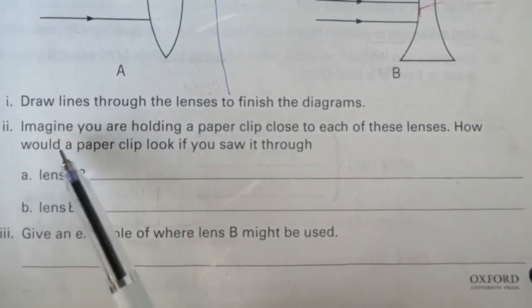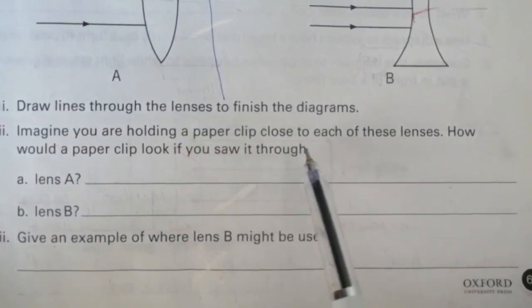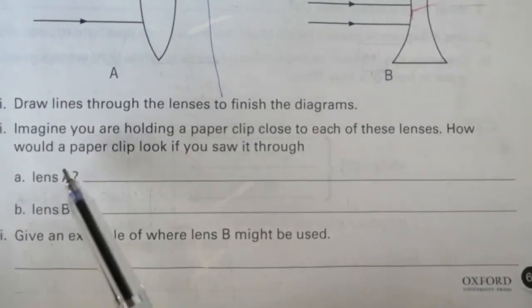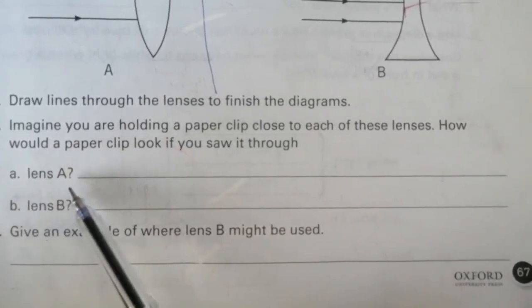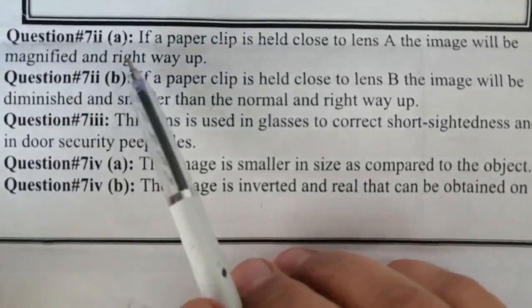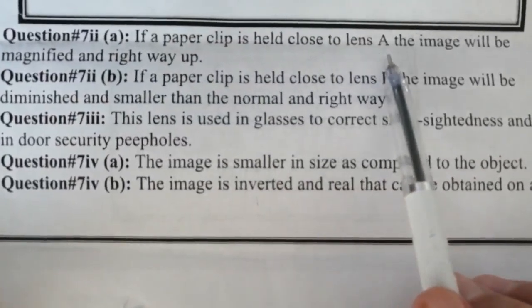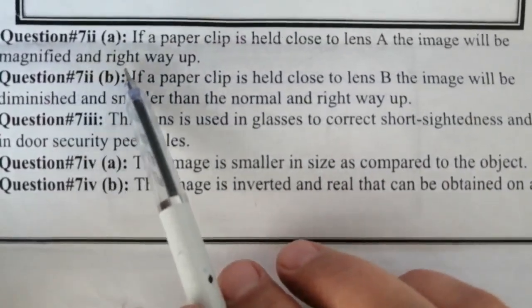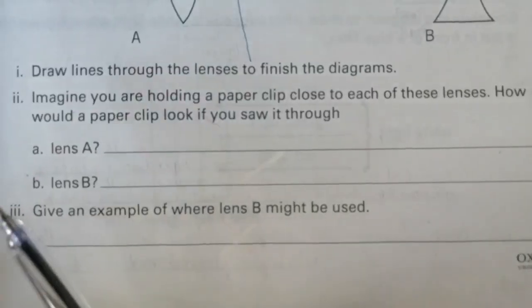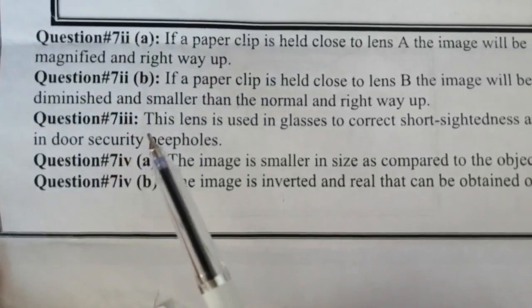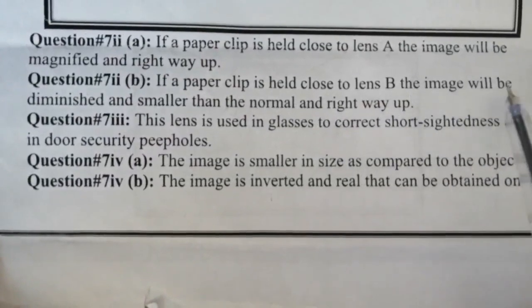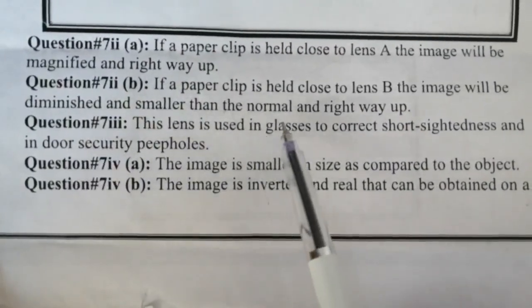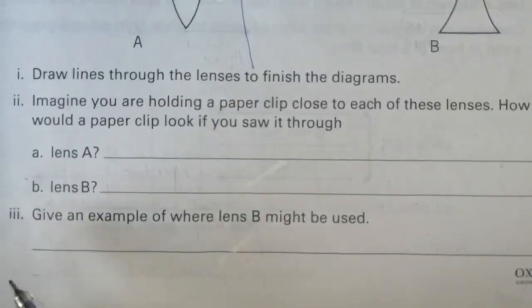Part 2: imagine you are holding a paper clip close to each of these lenses. How would a paper clip look if you saw it through lens A? The answer is: if a paper clip is held close to lens A, the image will be diminished, smaller than normal, and right way up. For lens B, if a paper clip is held close to lens B, the image will also be diminished, smaller than normal, and right way up.